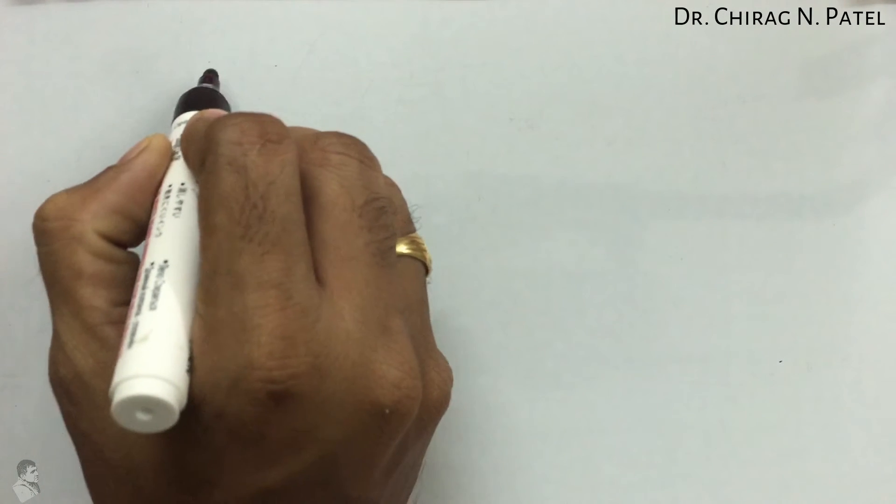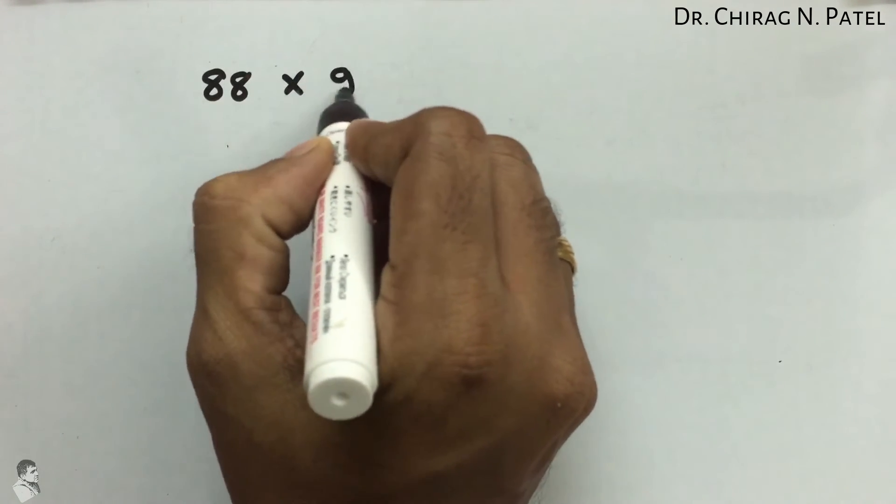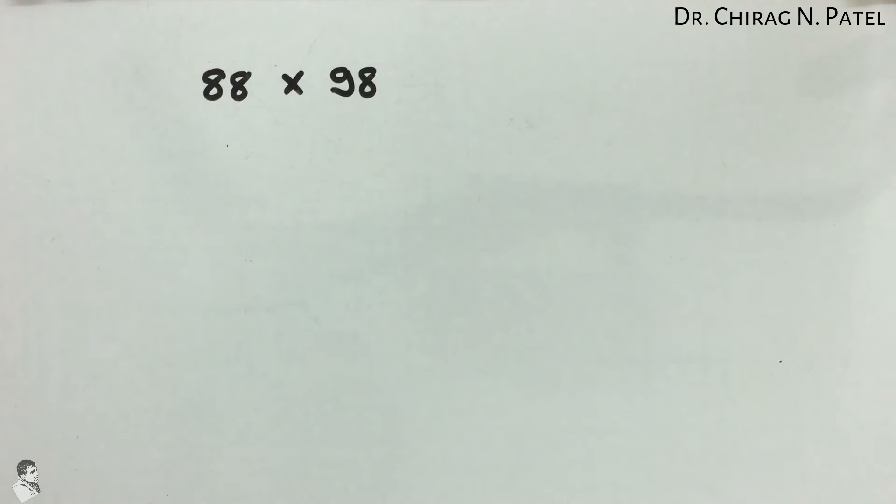So here let's take two values: 88 and multiply that with 98. Both numbers are very close to 100.